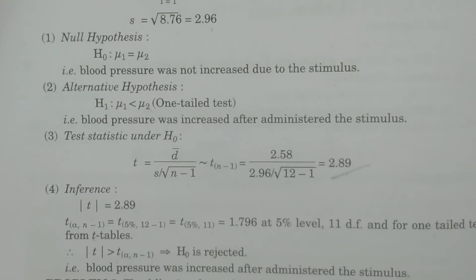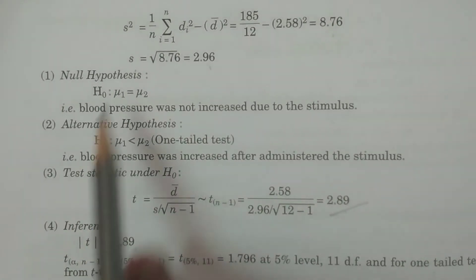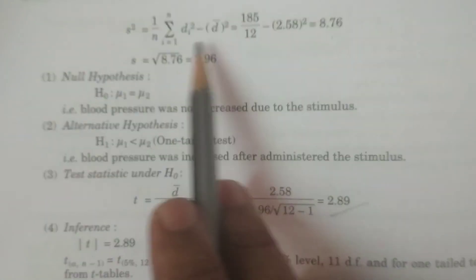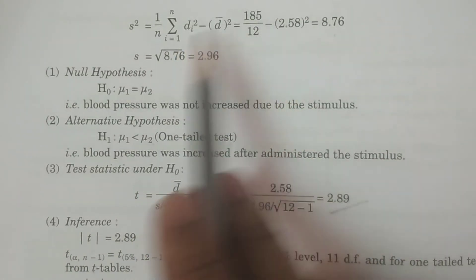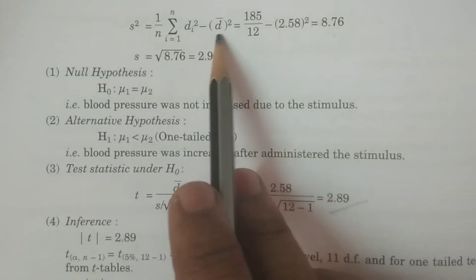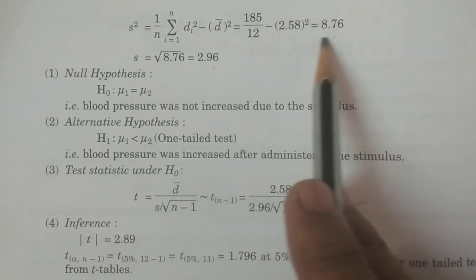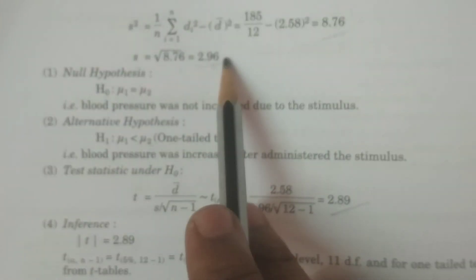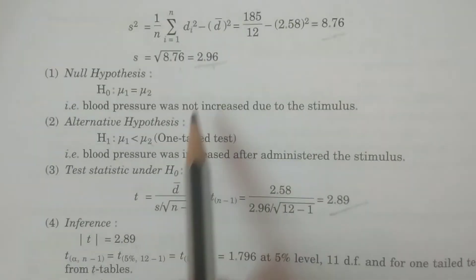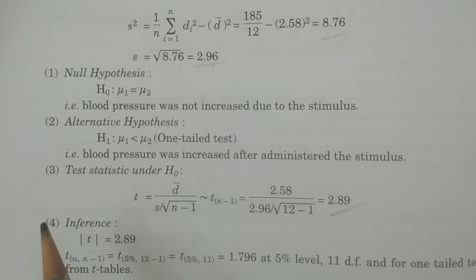Now we calculate the standard deviation s of the differences. s-squared equals (1/n) × summation DI-squared minus d-bar squared. Summation DI-squared is 185, divided by n equal to 12, minus d-bar 2.58 squared, gives s-squared equal to 8.76. Therefore s equals square root of 8.76, which equals 2.96.